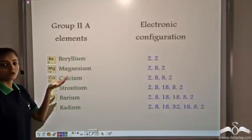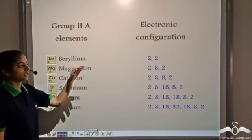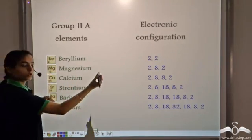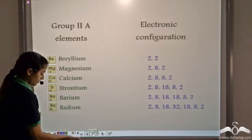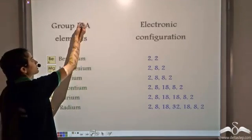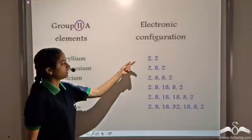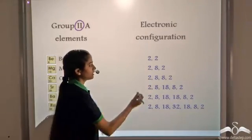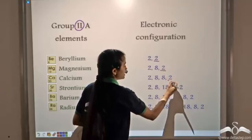Let's see the elements belonging to group 2A. Beryllium has electronic configuration 2,2; Magnesium, 2,8,2; and so on. So we see the same change here — these are group 2A elements. The number of shells increases one by one, and the valence shell has 2 electrons each.